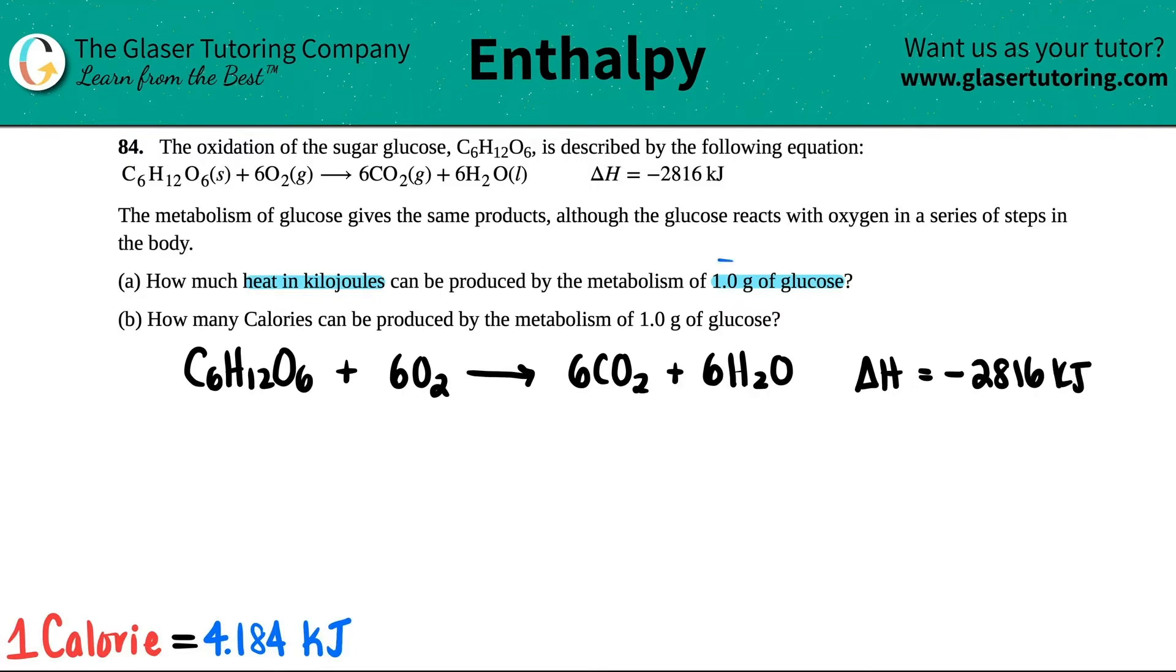Okay, so start with what you're given. I have one, so maybe I'll say this is for letter A. I have 1.0 gram of glucose, which they said was C6H12O6.